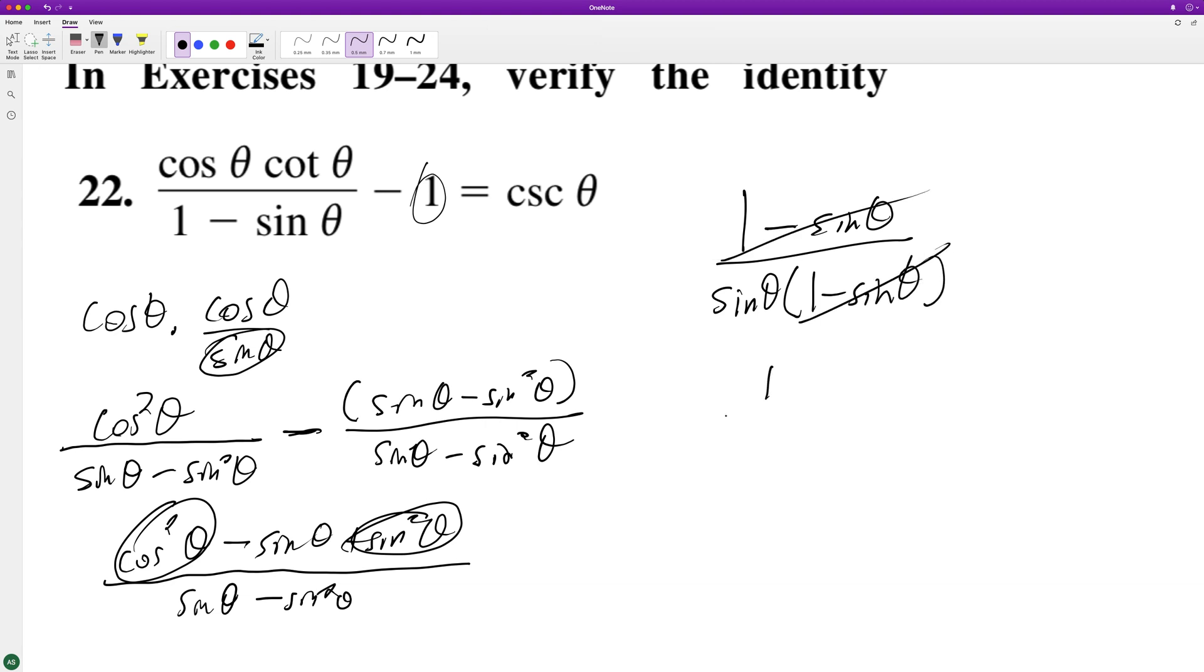These cancel off. We're left with one over sine theta. And one over sine theta is the same thing as the cosecant theta.